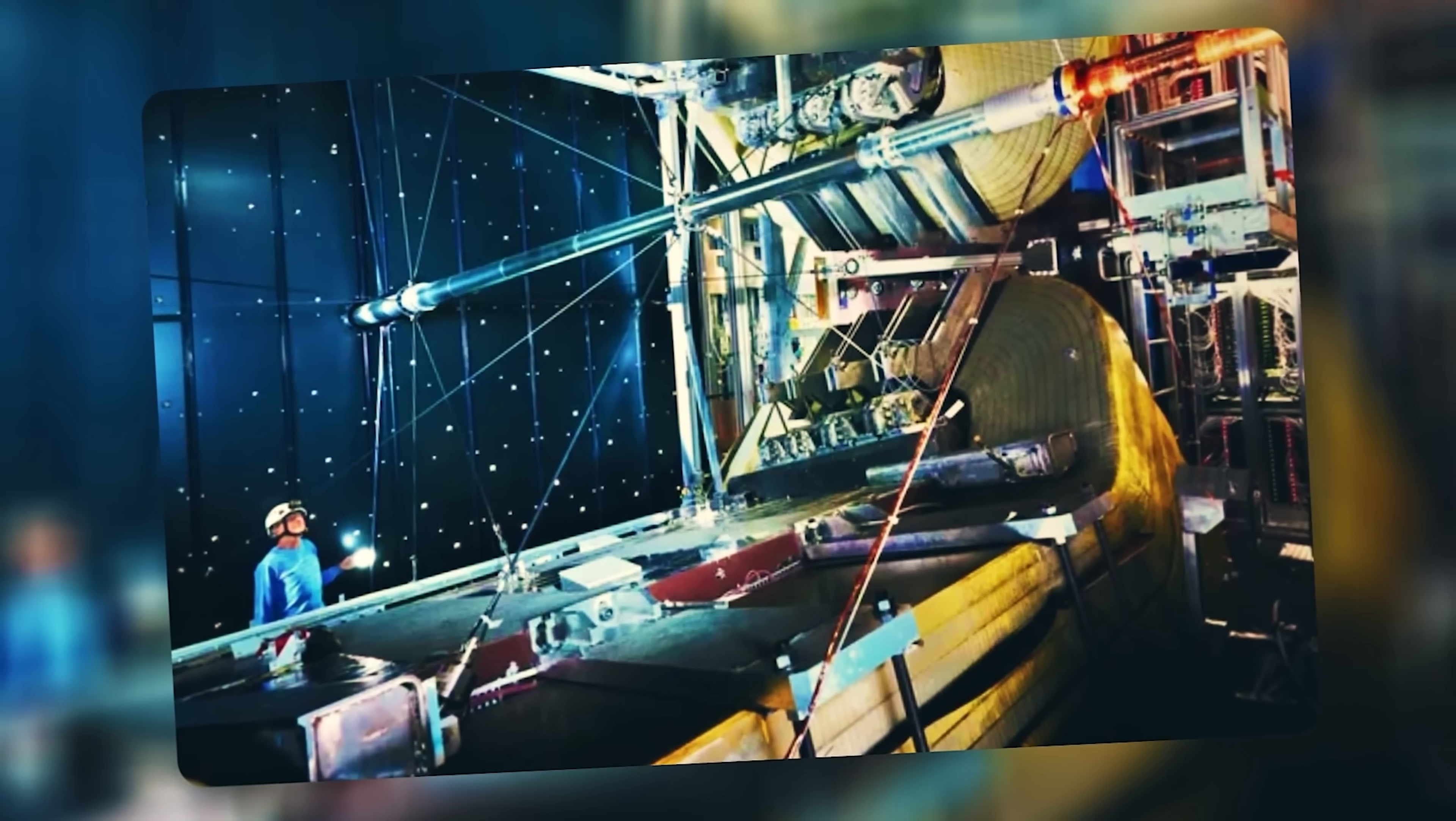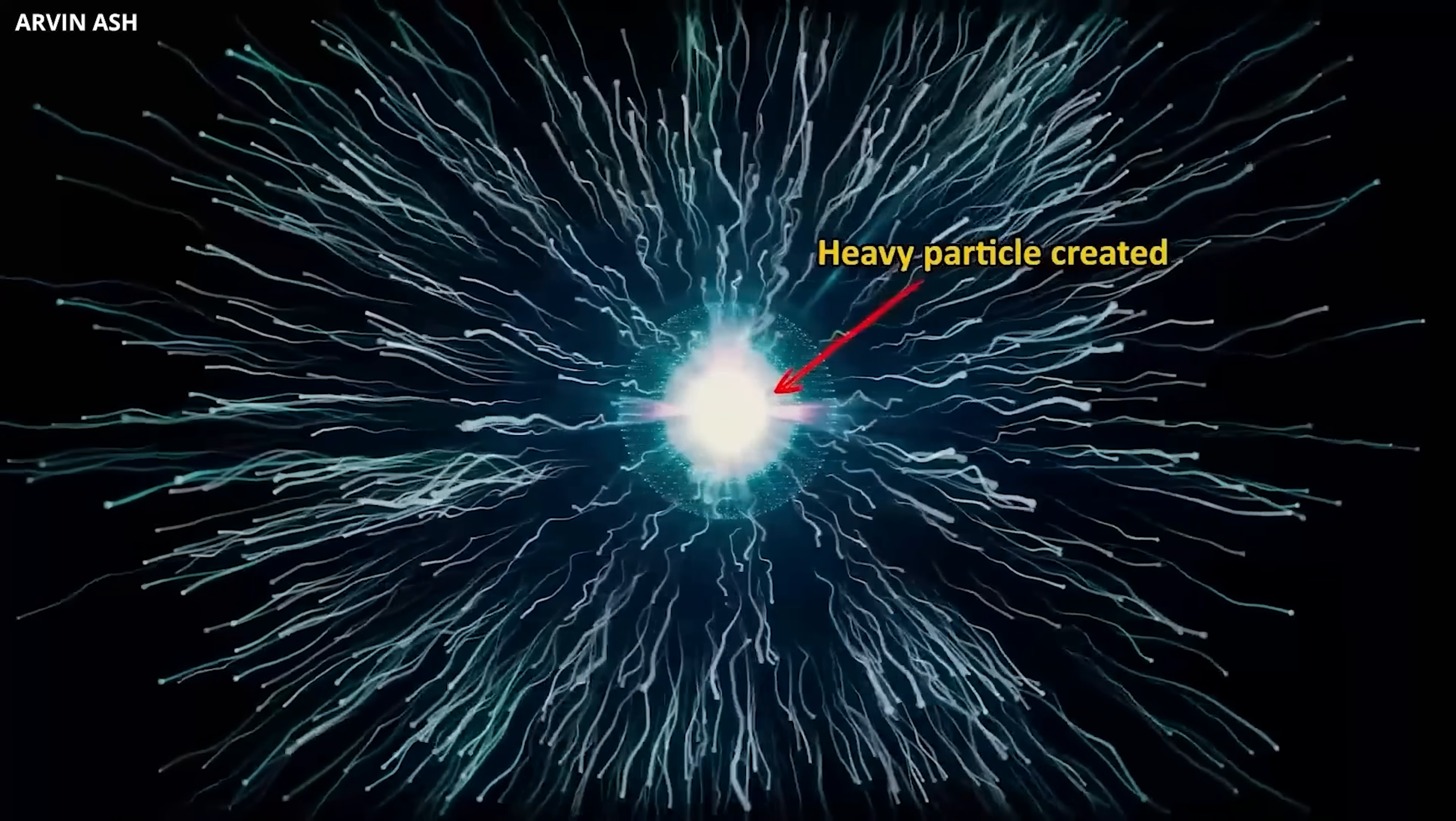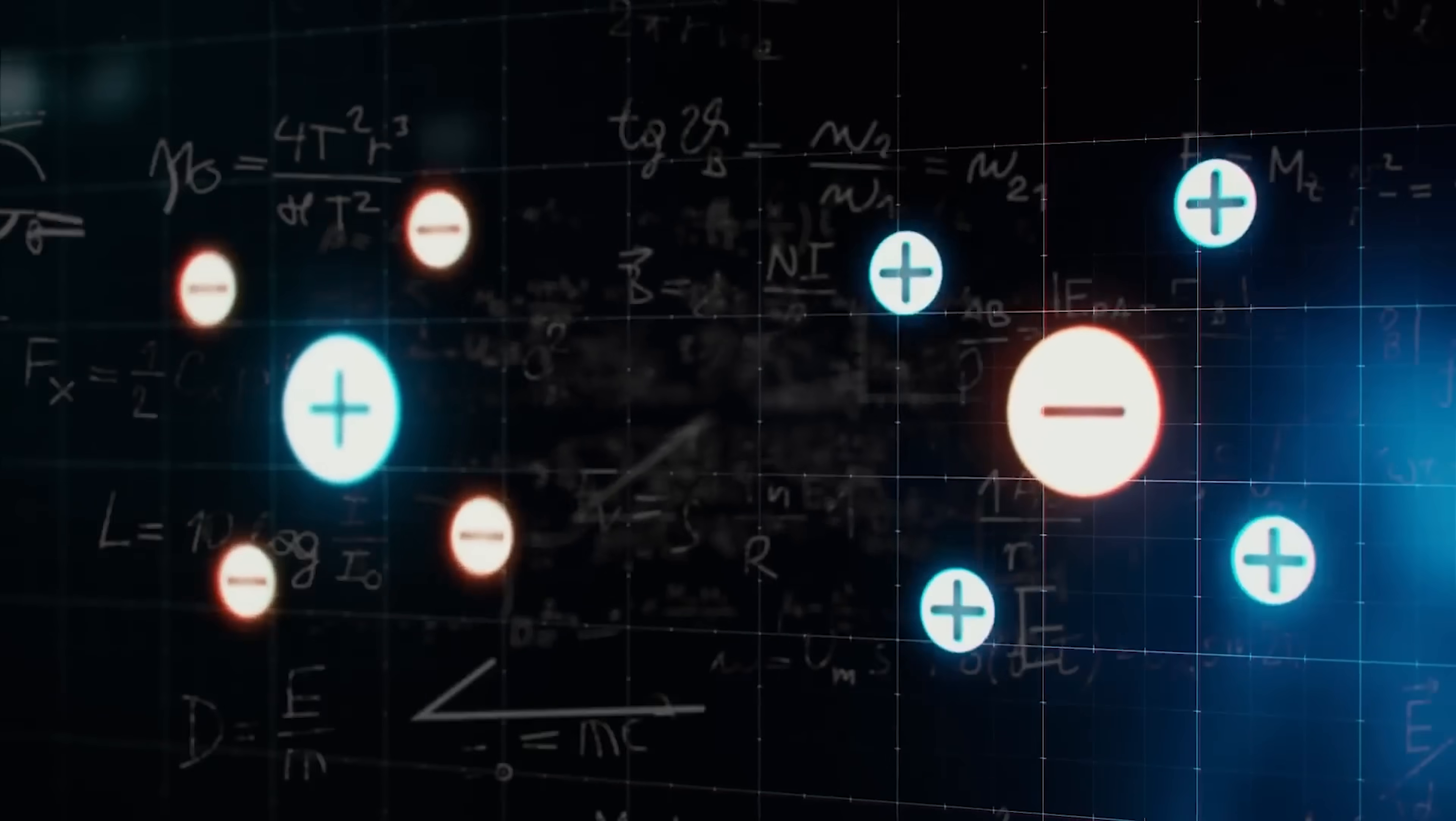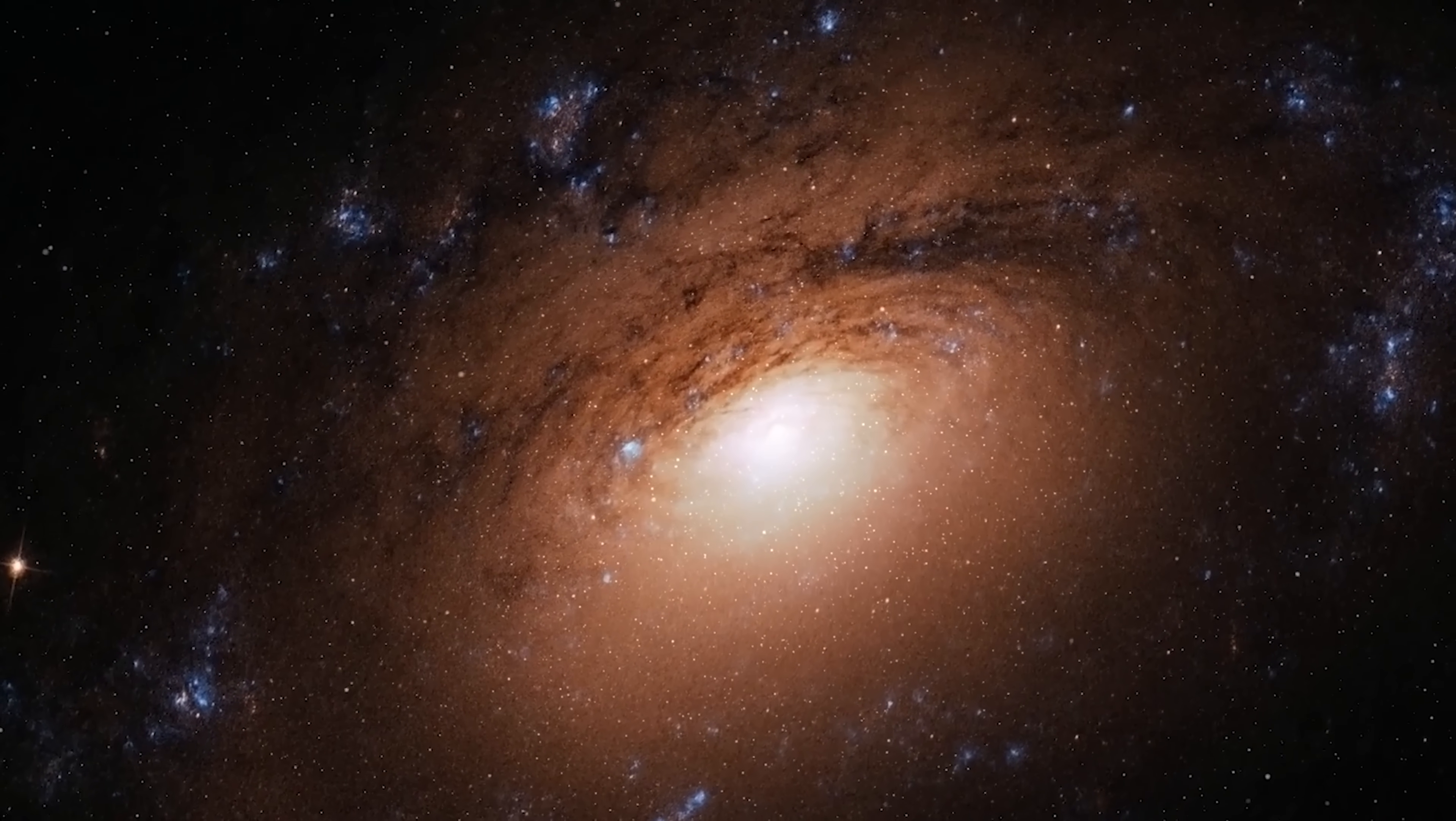What the Large Hadron Collider beauty team found is so important because they proved that when some particles decay, there's a real, measurable difference between matter and antimatter. This completely breaks CP symmetry, which is a rule in physics that says matter and its antimatter twin should be perfect mirror images. By finding a crack in this mirror, we finally have proof of how the universe could have rigged the game for matter in the very beginning.